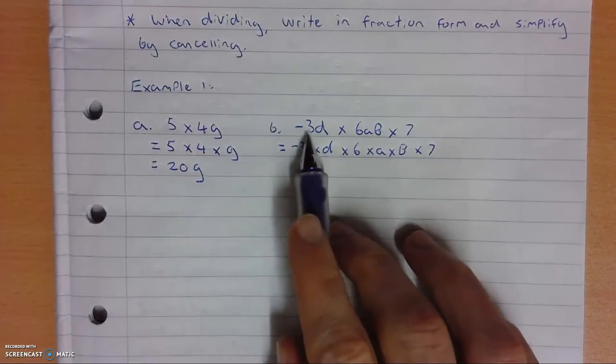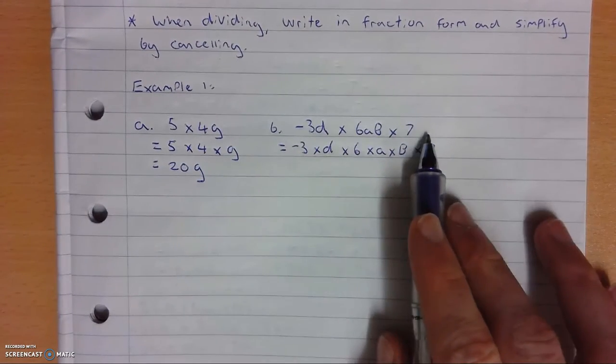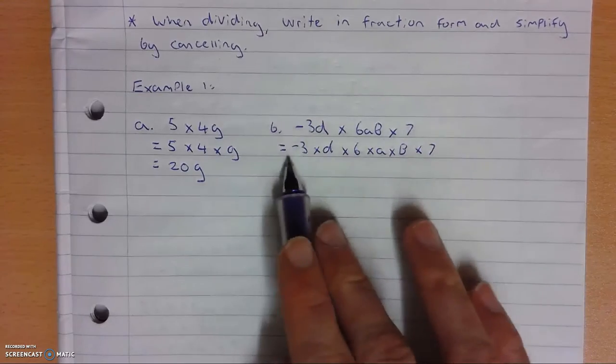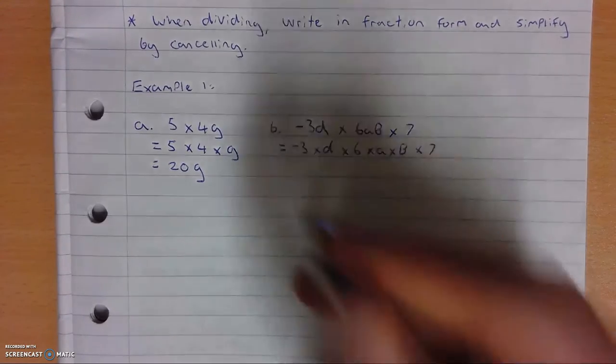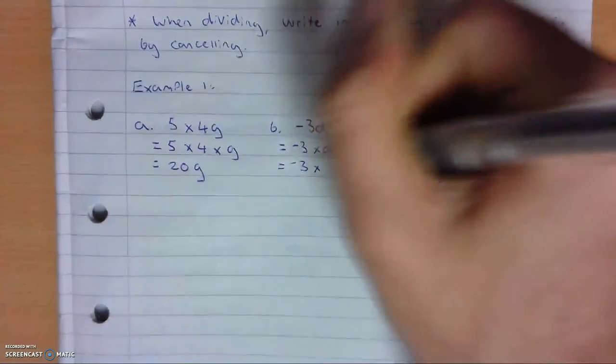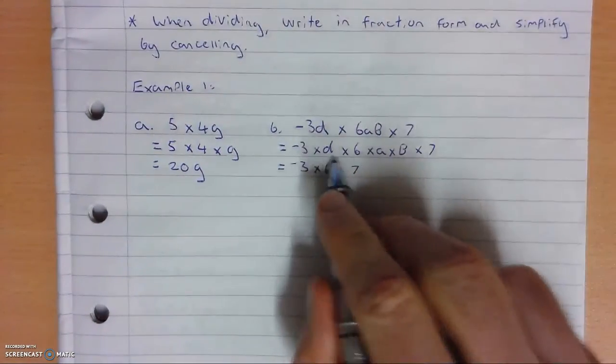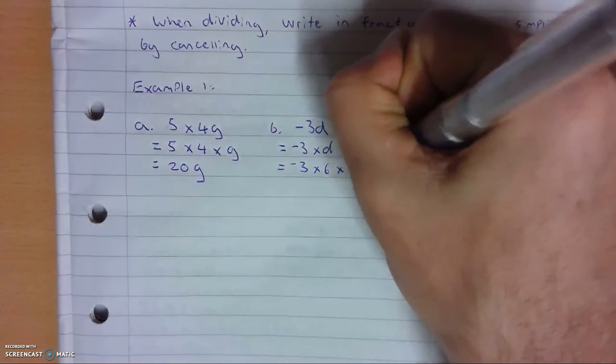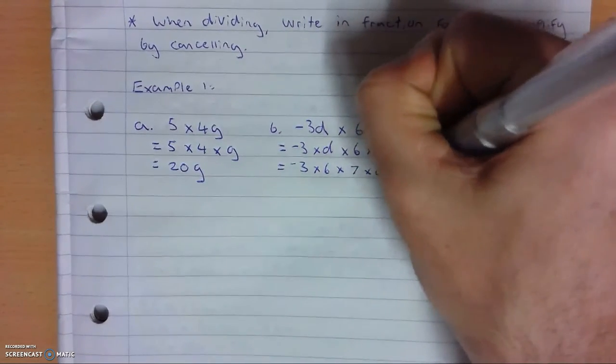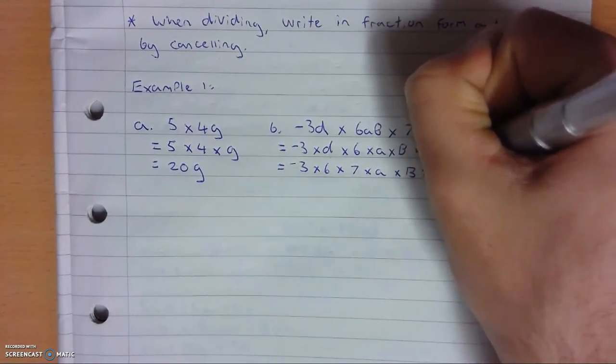So all I've done is I've taken our three terms, split it all up by adding all our hidden multiplication symbols. And now I can group my numbers and variables together, so it'd be negative 3 times 6, times 7, and then whatever variables I have left, times a, times b, and times d.